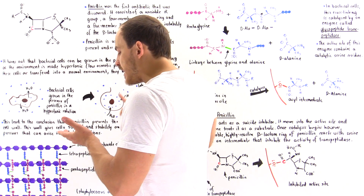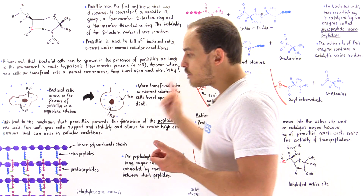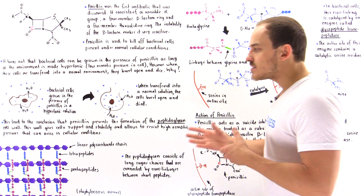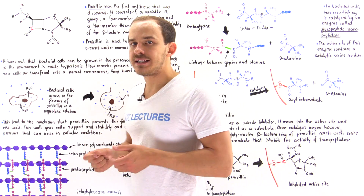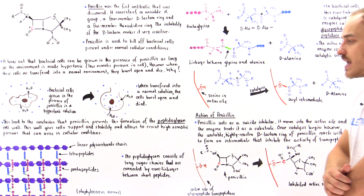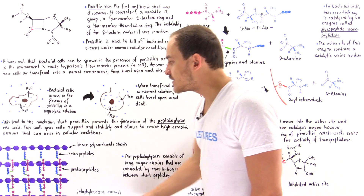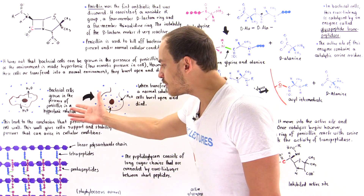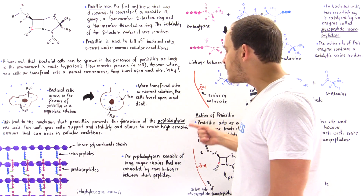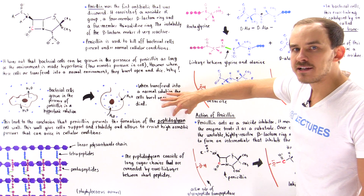The next question is: how exactly does penicillin act on these peptidoglycan cell walls? Before we answer that, let's discuss the structure of peptidoglycan and how bacterial cells actually build this cell wall. Examining this specific strain of bacterial cells, peptidoglycan means we have a peptide component and a glycan component.